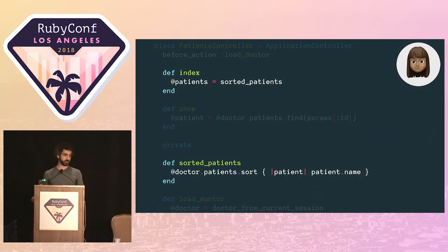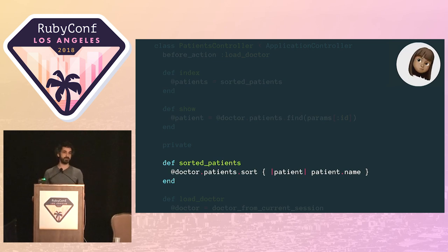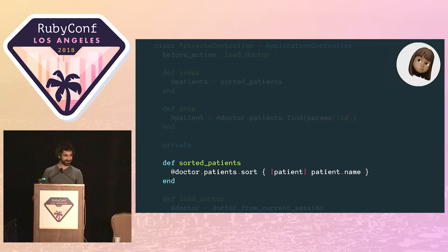There's a method called sorted_patients that's returning the patients sorted by their names. But what she finds surprising is it's doing so using Ruby's sort method, in-memory, rather than as part of the database query. That doesn't seem very efficient, thinks Seema.